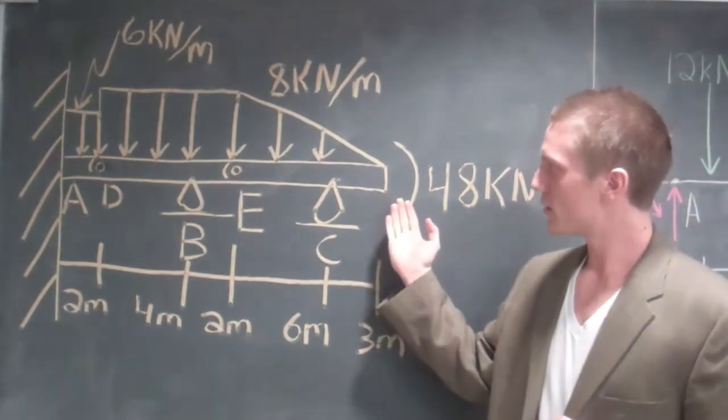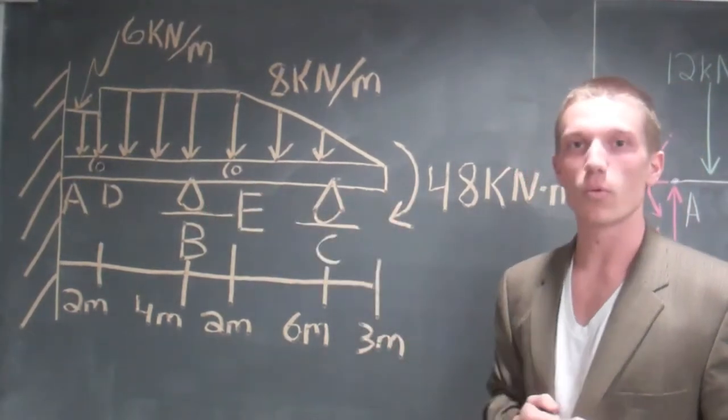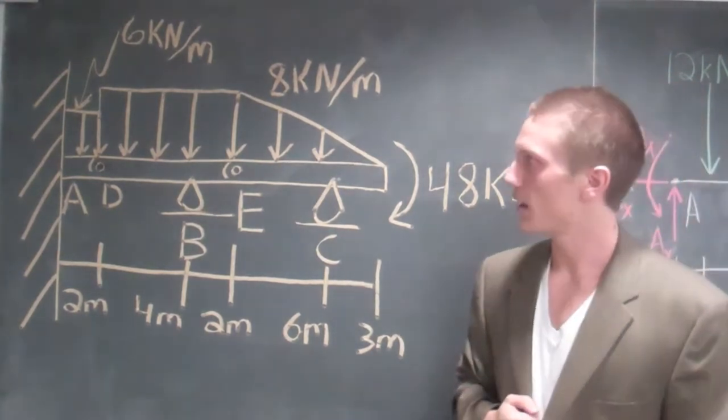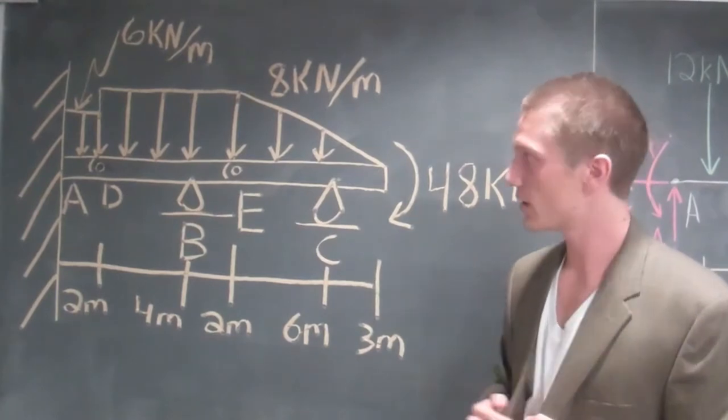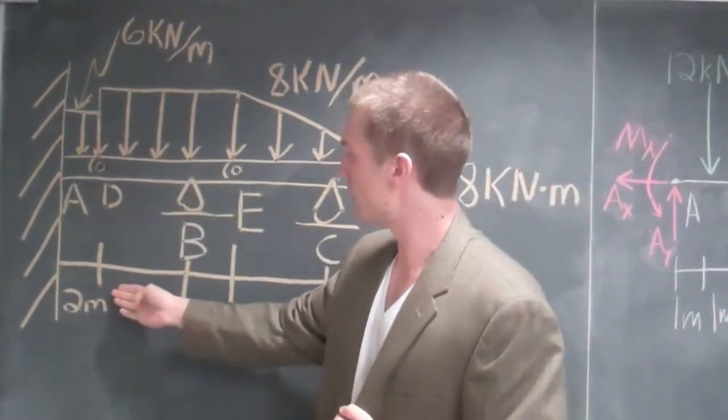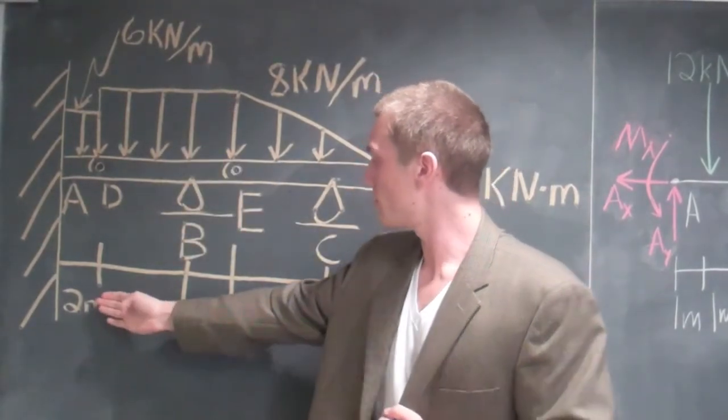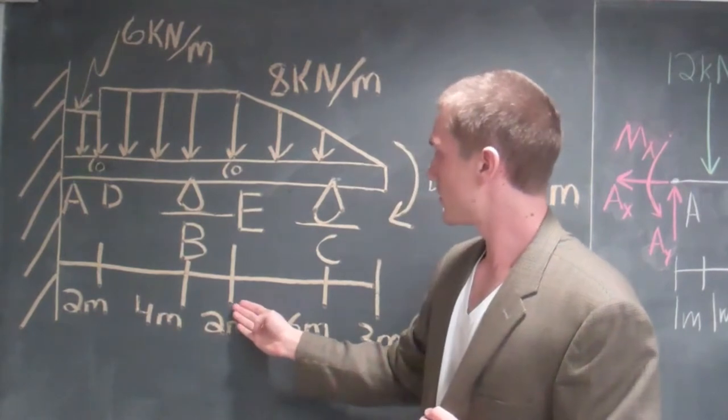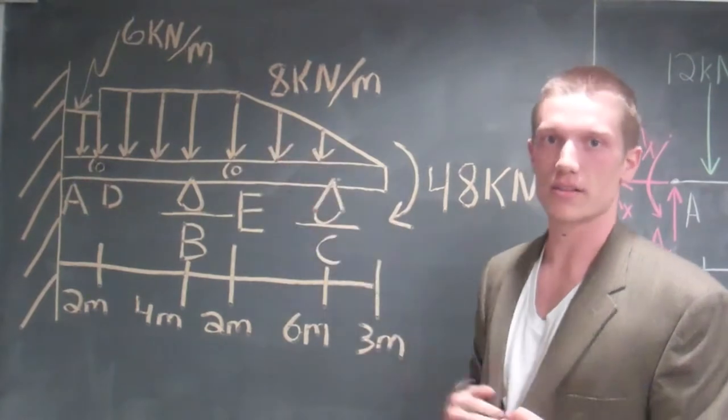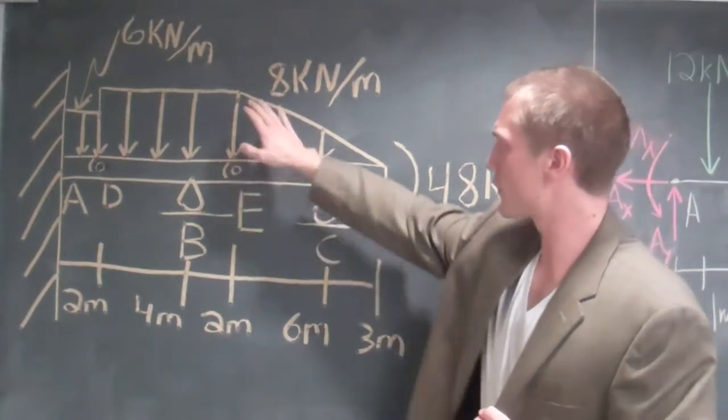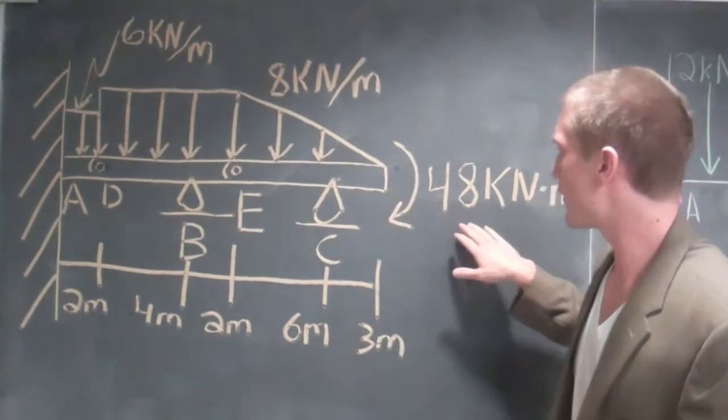Today's lecture is on statics. We have a compound beam here fixed to a wall. This compound beam has three different distributive loads. Our first one is over two meters and it's six kilonewtons per meter. Our second one is from that two meters to here, and that is eight kilonewtons per meter. Our last one has a triangle shape, and that one goes from this eight kilonewtons per meter down to zero kilonewtons per meter.